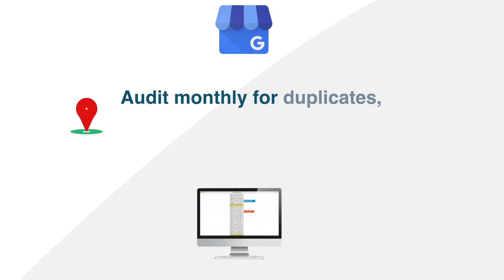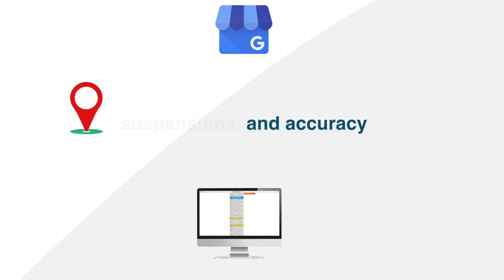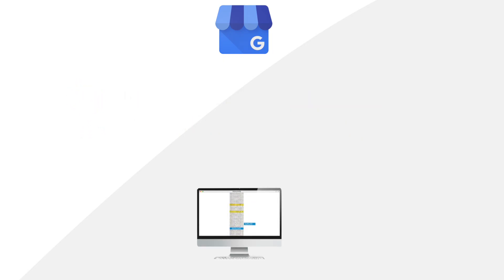Item number five: you need a monthly process to ensure there are no duplicates, no suspensions, everything's accurate, you're monitoring locations with bad reviews and good reviews, and you have an overall view of your brand ecosystem and work to correct anything that's broken.